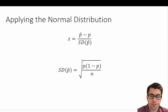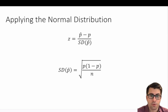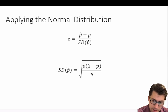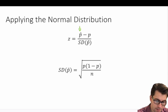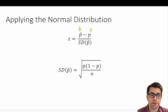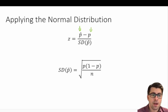Once we've checked our assumptions and conditions, we can apply a normal distribution to our model by calculating a z-score as we've done before. If you need to revisit the normal distribution, see the videos on the normal distribution. When we calculate our z-score for the proportion of our sample, we take p-hat — the observed proportion of our sample — minus p, the proportion of our population or expected proportion, divided by the standard deviation of p-hat.